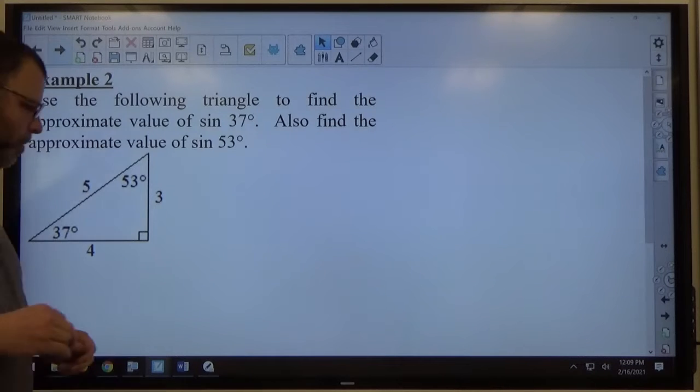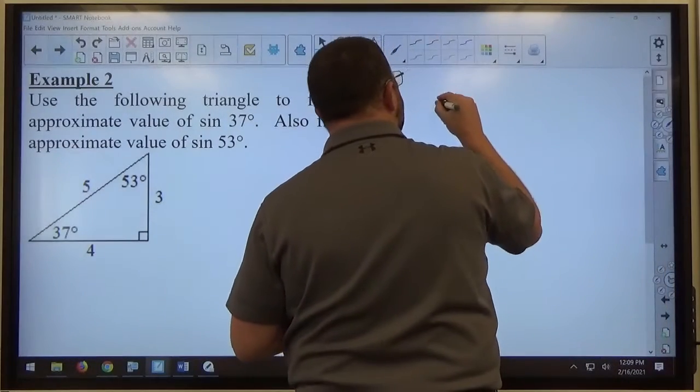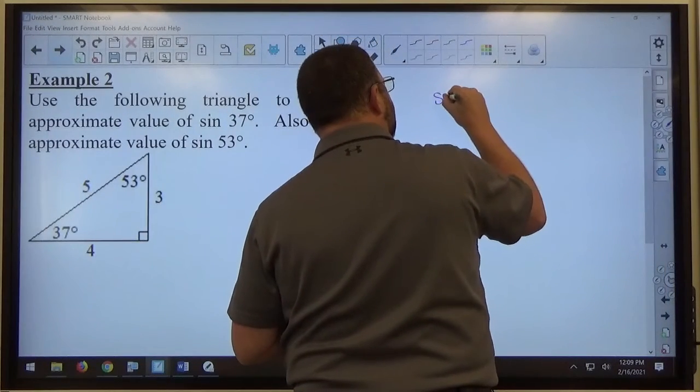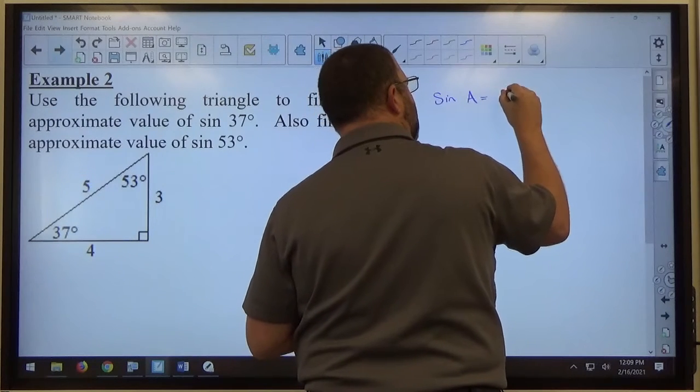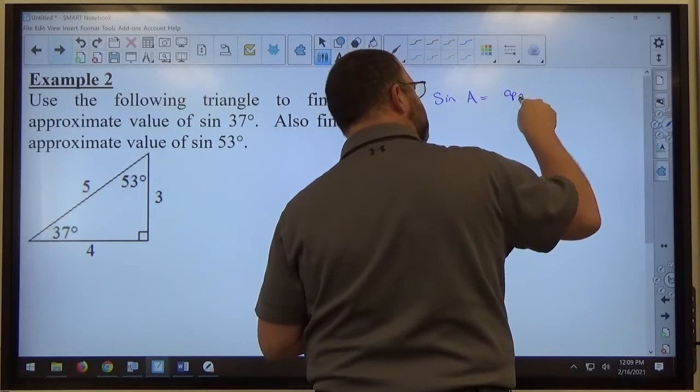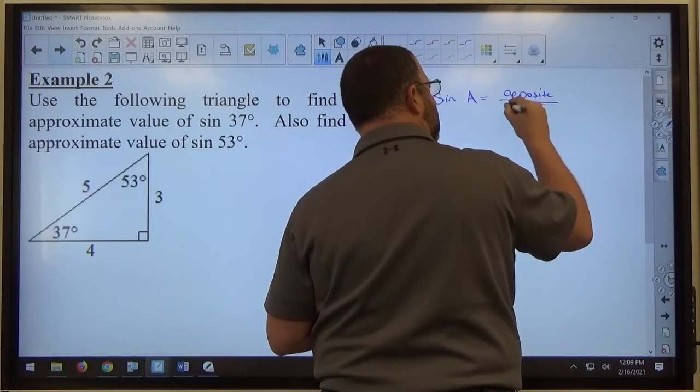So let's talk about this sine that we're discussing here. Sine of an angle equals opposite over hypotenuse.